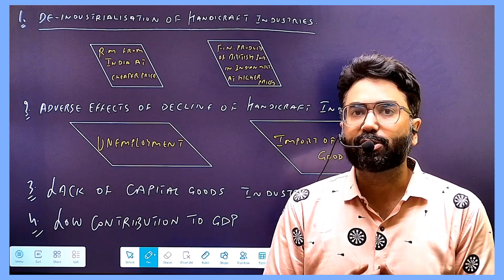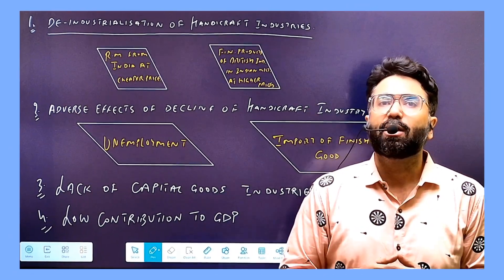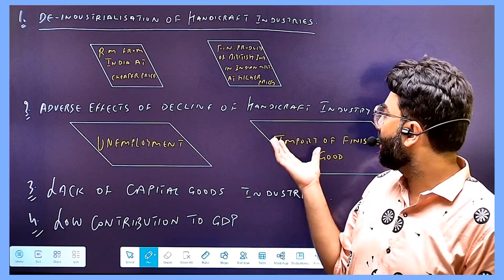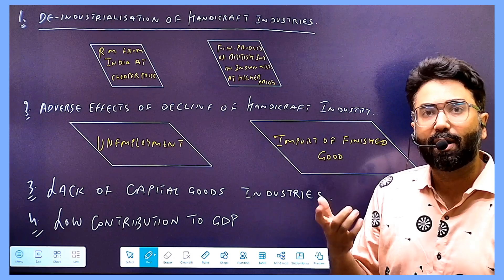So they destroyed handicraft industries. First, unemployment increased, and then we became dependent on the British government. India didn't have anything to produce, but consumers needed goods. And if someone needed anything in India, the British government would supply machine-made goods. In India, production costs were very high, but Chinese goods were cheap.